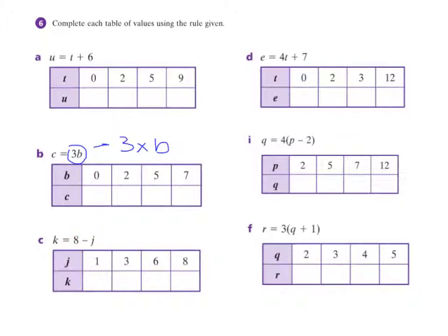This one is pretty straightforward — take away the J value. 8 take 1 and my answer would go in there. So I guess it's a cheat's way of making you do 4 sums in just one table. For D we've got 4 lots of T plus 7. That's 4 times my T value, which is 0, then 2, then 3, then 12, plus 7. They're a pair, so I do a bracket around that just to remind me that I've got to do this value first. So 4 times my T value, then plus 7.